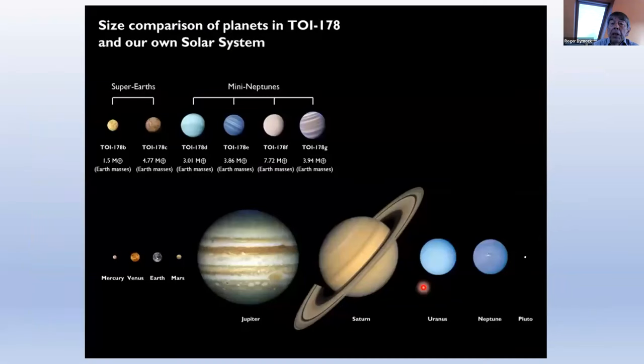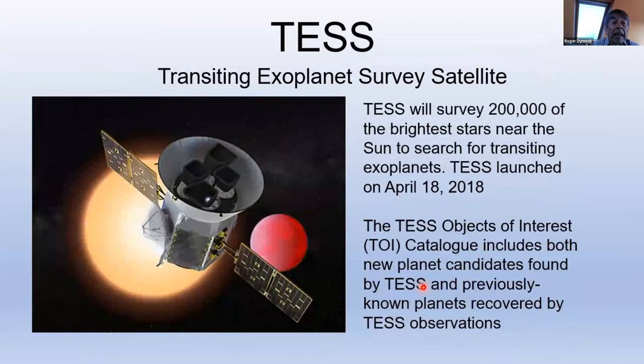TTVs can also be used to measure the masses of planets that are in 2:4:6:9:12 resonant chains. The system TOI-178 is an example of this. For those new to this, TOI stands for TESS Object of Interest, TESS being the Transiting Exoplanet Survey Satellite. Lots of acronyms. And it will survey 200,000 of the brightest stars near the sun to search for transiting exoplanets. And it's been up there about five years now.